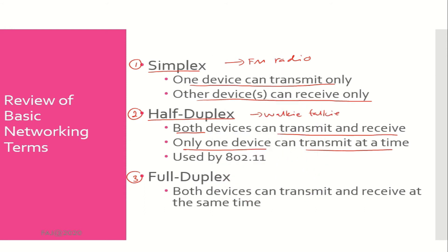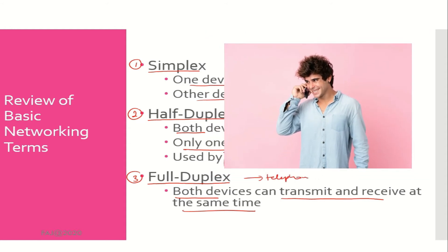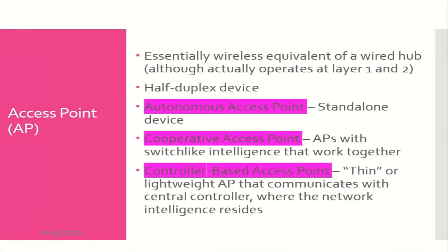All RF communication by nature is half duplex. IEEE 802.11 wireless technology uses half duplex communication. Full duplex communication means both devices are capable of transmitting and receiving at the same time — a telephone conversation is an example. Most IEEE 802.3 equipment is capable of full duplex communication. Access points are half duplex devices because the RF medium allows for only one radio to transmit at any given time.